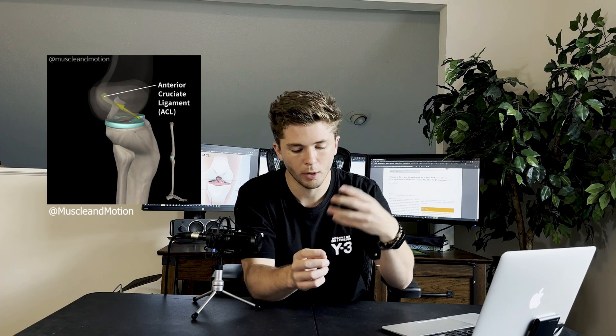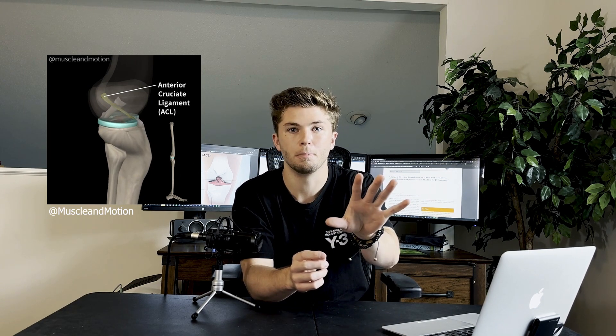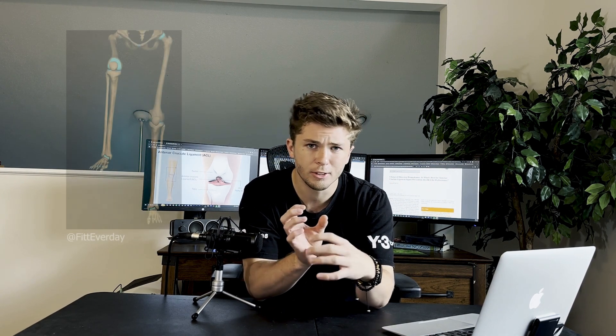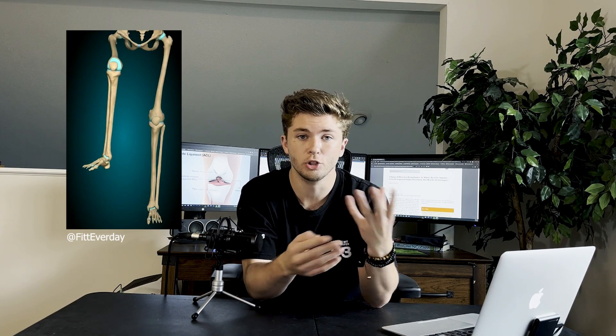Essentially, the role of the ACL is twofold. First, it's trying to prevent the forward translation of the tibia — you don't want the tibia to go ahead of both the femur and the patella, or the kneecap. The second, which is a little bit more important: the ACL is trying to prevent internal and external rotation of the knee from occurring. Generally, when you think of the knee, it's just flexion and extension — those are the two movements that really occur within the knee.